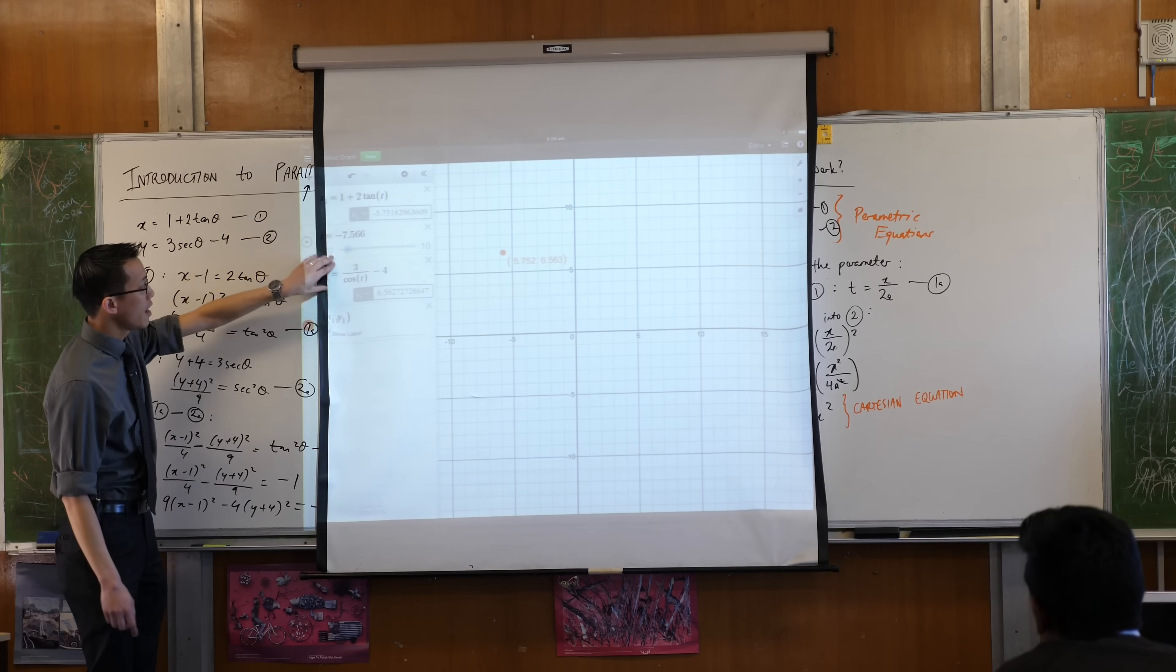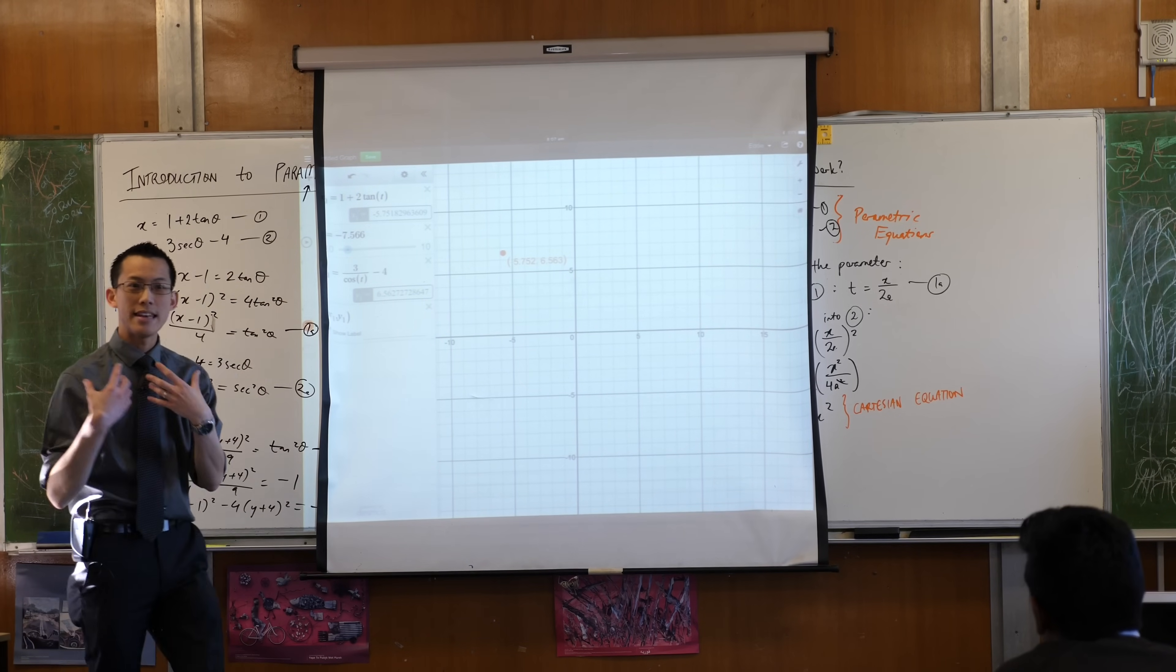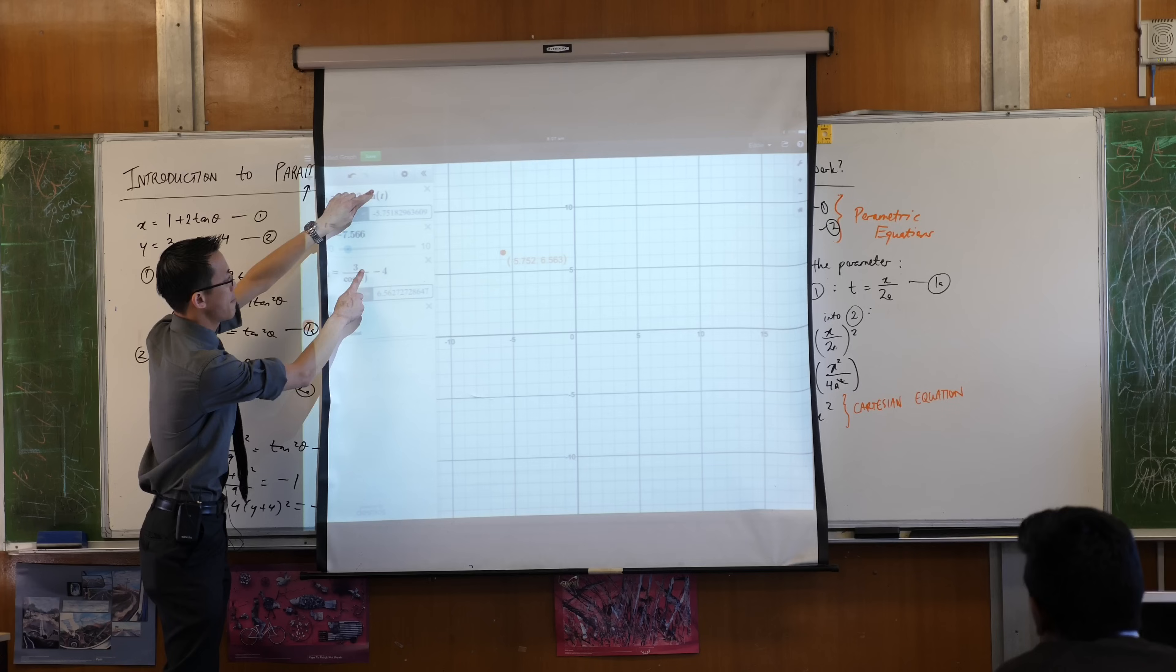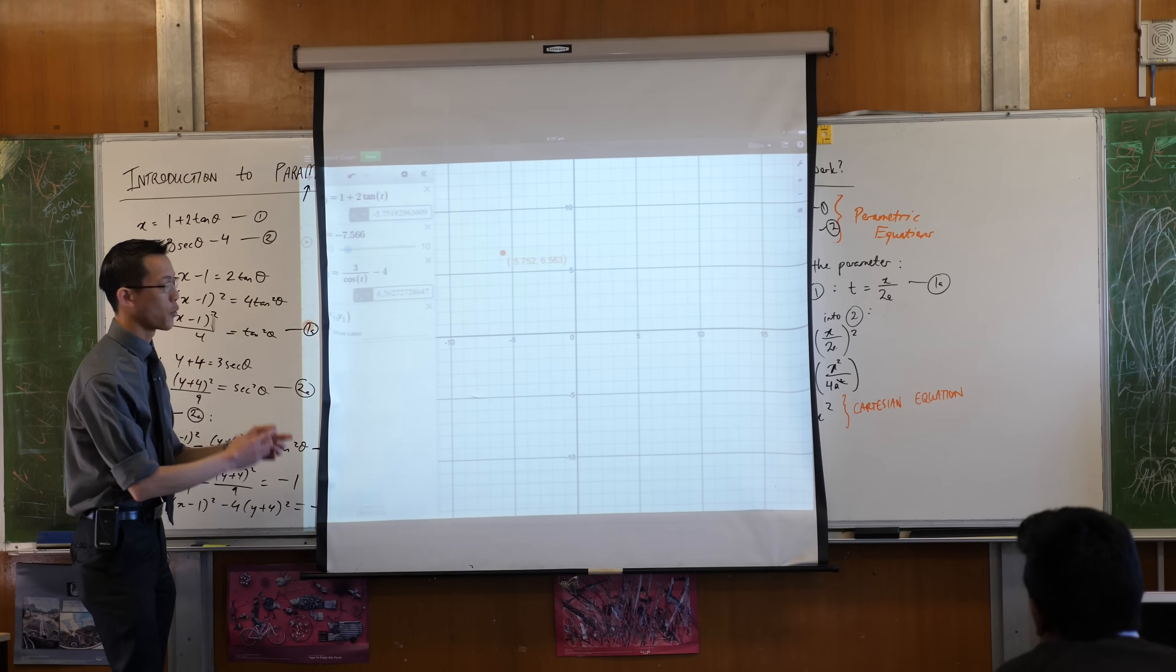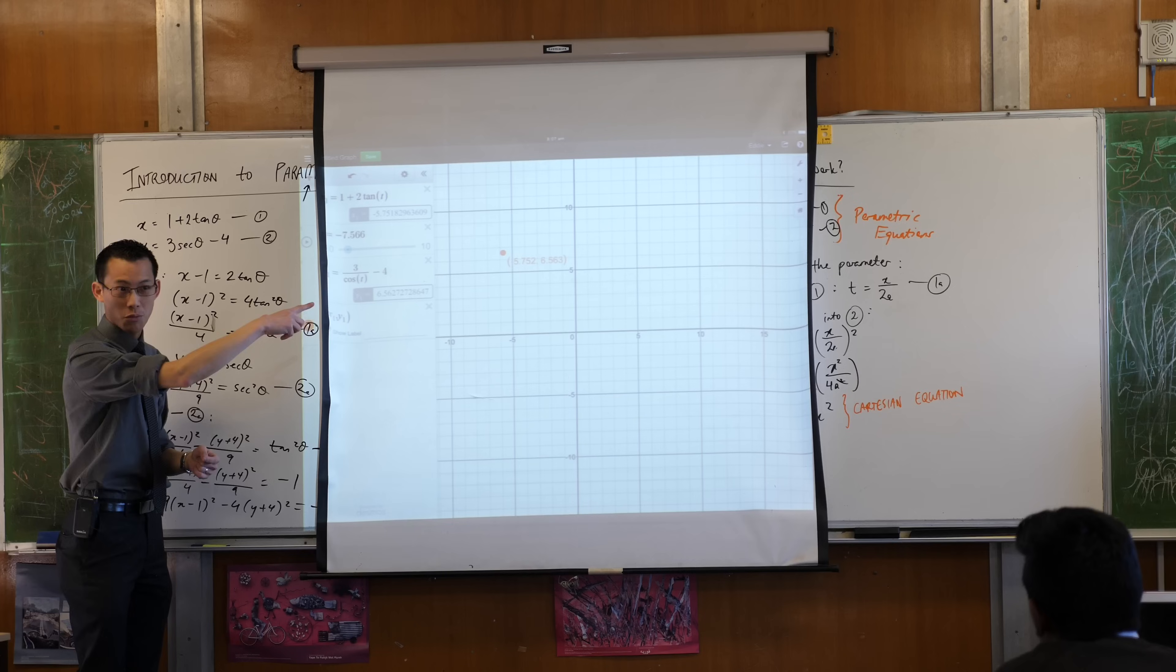and here's my y coordinate. Now the whole point of this is that now as I change the parameter, both x and y change simultaneously, so one value pushes the whole thing around.